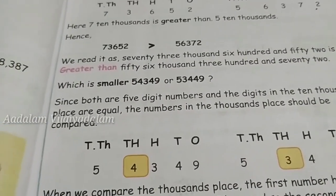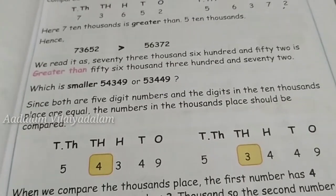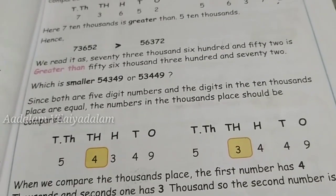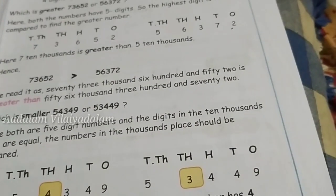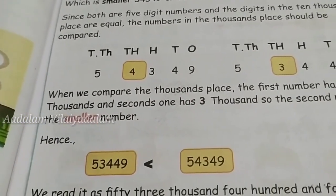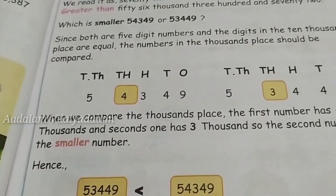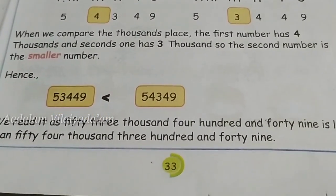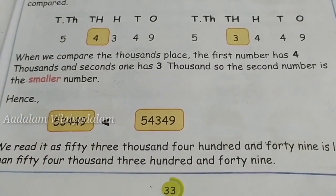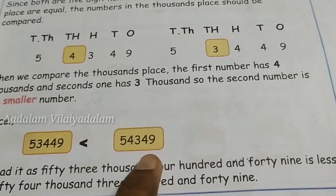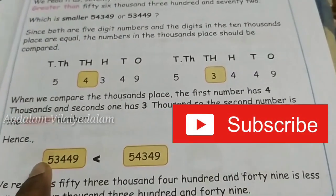To find the smaller number when both are five-digit numbers, compare the ten-thousands digit and then the thousands digit. Here, in the ten-thousands place we have four and three — the bigger number is fifty-four thousand three hundred and forty-nine, and the smaller is fifty-three thousand four hundred and forty-nine. So fifty-four thousand is greater than fifty-three thousand.